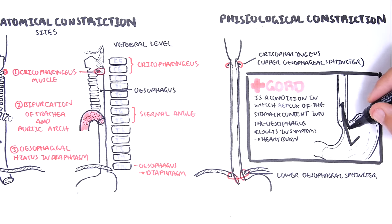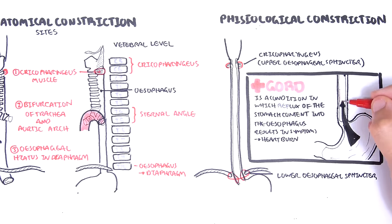An example of what could cause reflux is alcohol, because alcohol is known to relax the lower esophageal sphincter, allowing food content and acid to flow backwards, causing irritation of the esophagus.